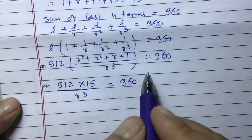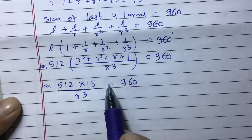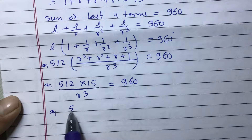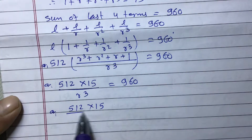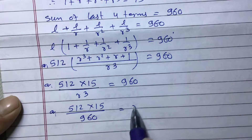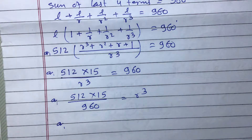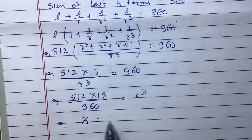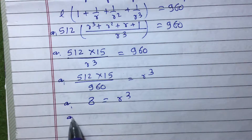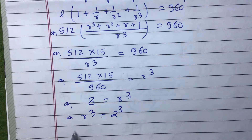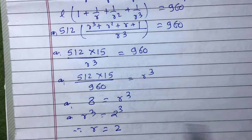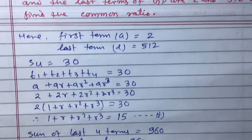Rearranging, r³ equals 512 times 15 divided by 960. Simplifying, 512 times 15 divided by 960 equals 8. So r³ equals 8, which means r³ equals 2³, therefore r equals 2. We have found the common ratio.